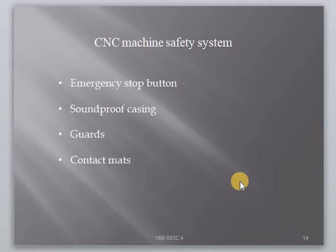The emergency stop button is used to shut down the machine immediately; it is located on the control panel and at other points on the machine. Soundproof casing reduces the noise emission generated by the operating section. Curtain guards, made of PVC, are designed to protect the operator from the risk of airborne chips or tool fragments. Guard fences mark the working area in which the machine moves, protecting the operator from interference with moving parts. Contact mats stop the machine immediately when the operator stands on the mat, protecting the operator from moving parts.